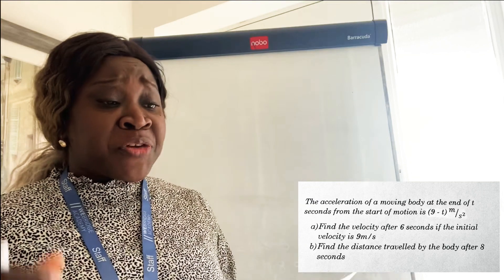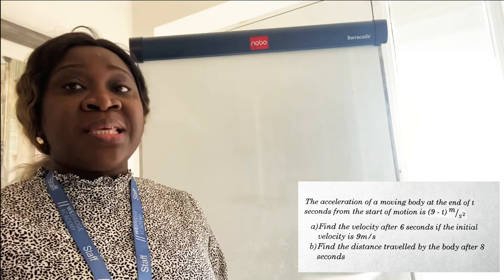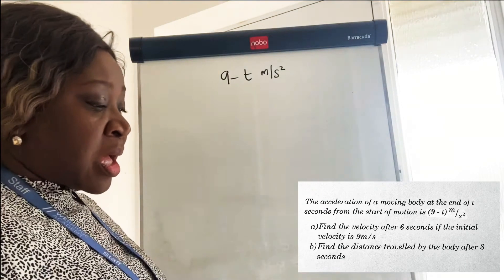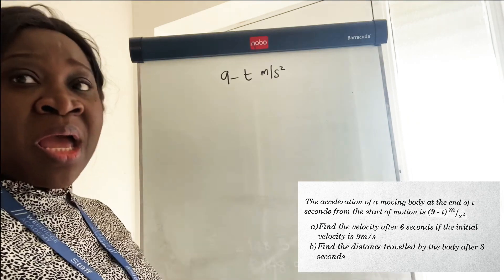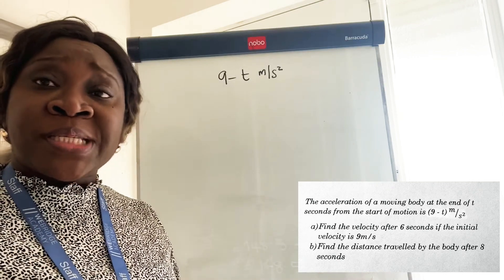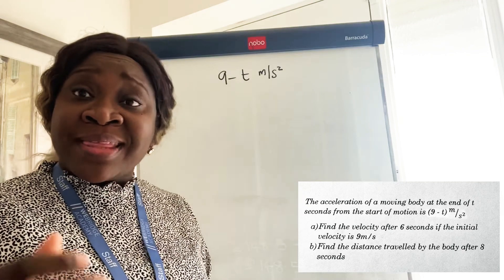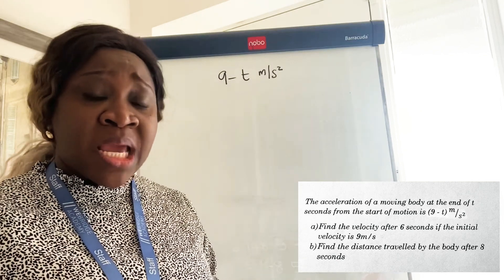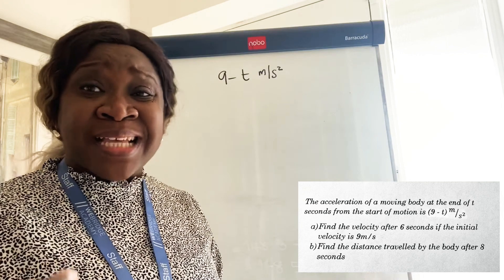This last example says the acceleration of a moving body at the end of t seconds from the start of motion is 9 minus t meters per second squared. The first question is: find the velocity after six seconds, if the initial velocity is 9 meters per second. We cannot solve this the same way as the other problems because we don't have enough information to use a definite integral. We have to write an equation for the velocity first, which means finding the integration constant C, before we can find the velocity at six seconds.